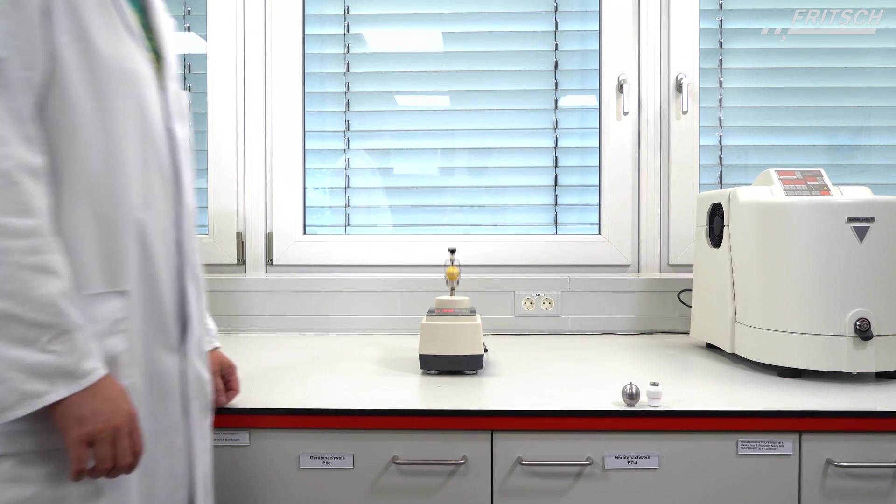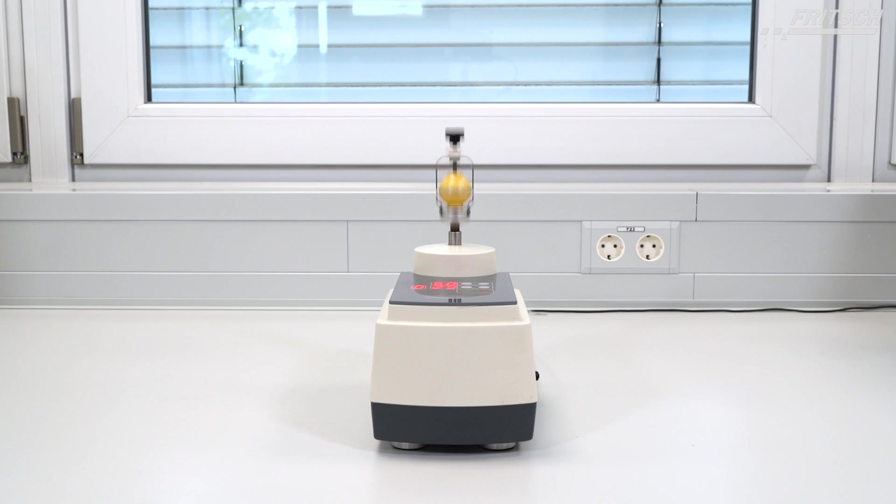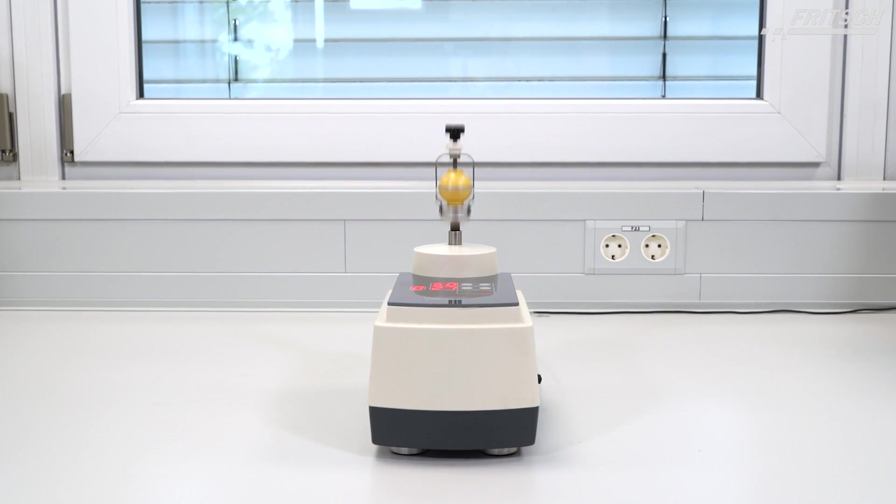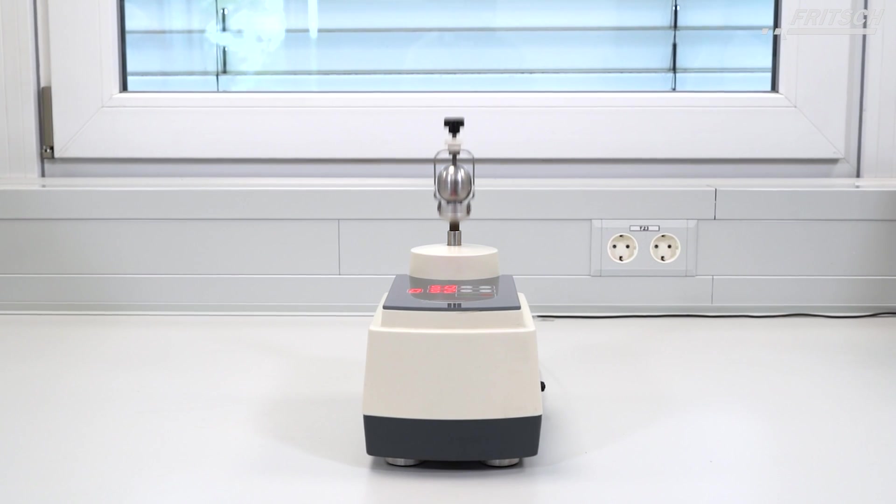Grinding in a ball mill takes place through impact and friction of the sample between the grinding balls and the inside wall of the grinding bowl.